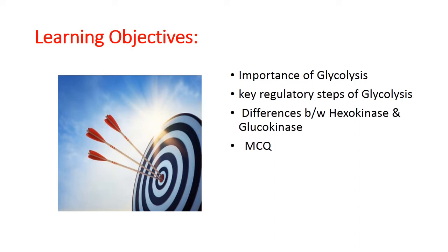Glycolysis is the sole pathway and source of energy for mature erythrocytes or RBCs, as they are devoid of mitochondria. It has both aerobic and anaerobic fates. Muscles get energy via anaerobic glycolysis during strenuous exercise, and the lactate formed gives rise to muscle pain. Glycolysis is also the metabolic pathway for catabolism of glucose in cancer cells.